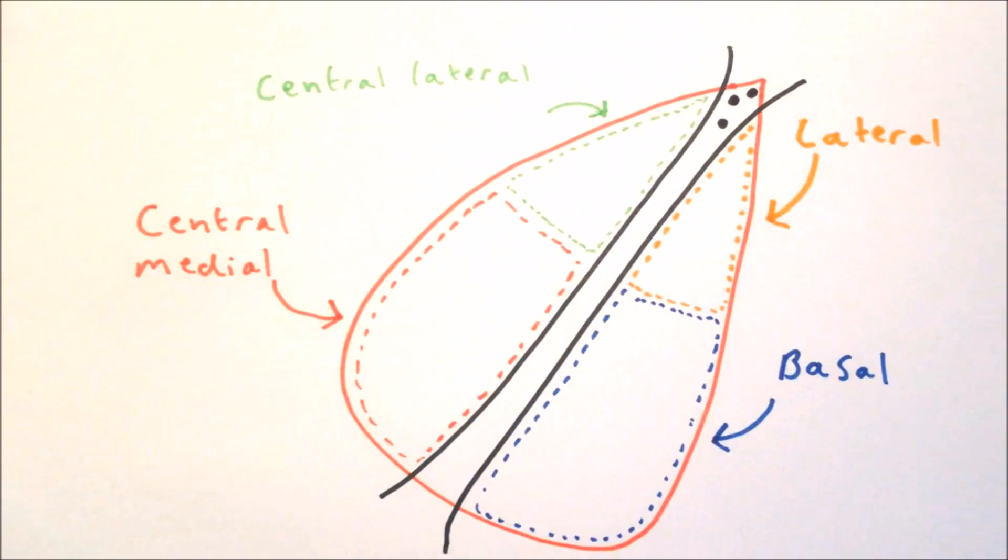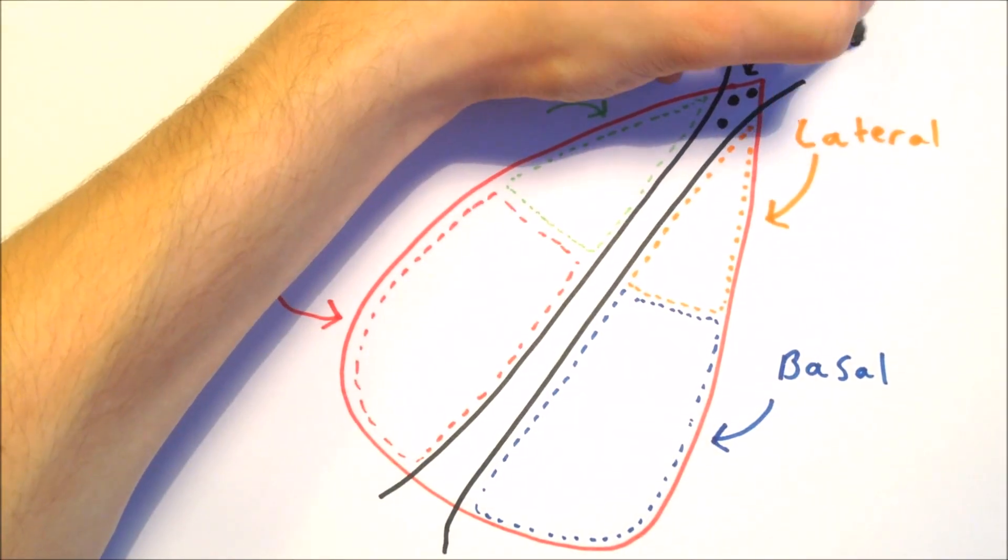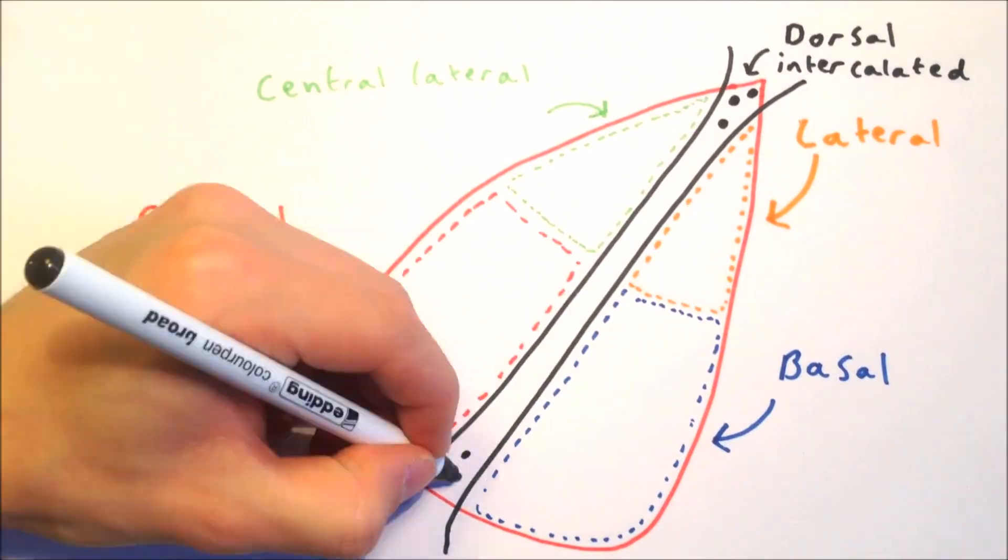There are also groups of intercalated cells dispersed within the fibre tracts of the nuclei. Two important groups of intercalated cells are the dorsal intercalated cells and the ventral intercalated cells.